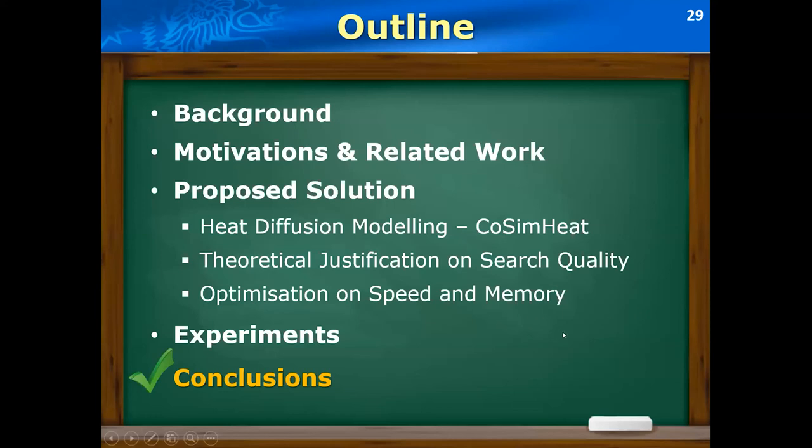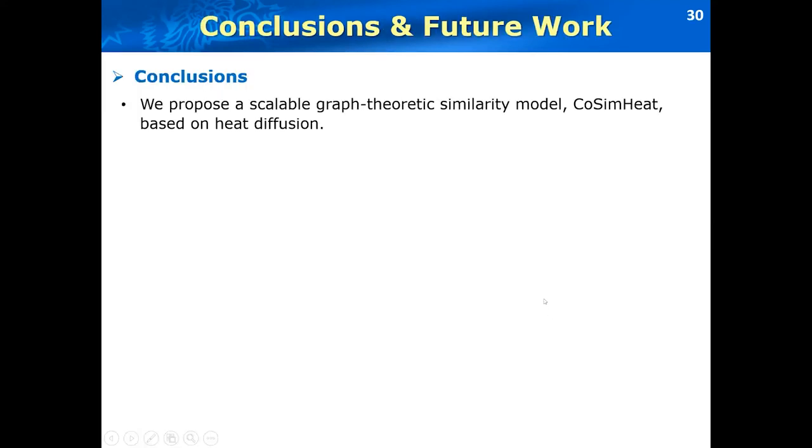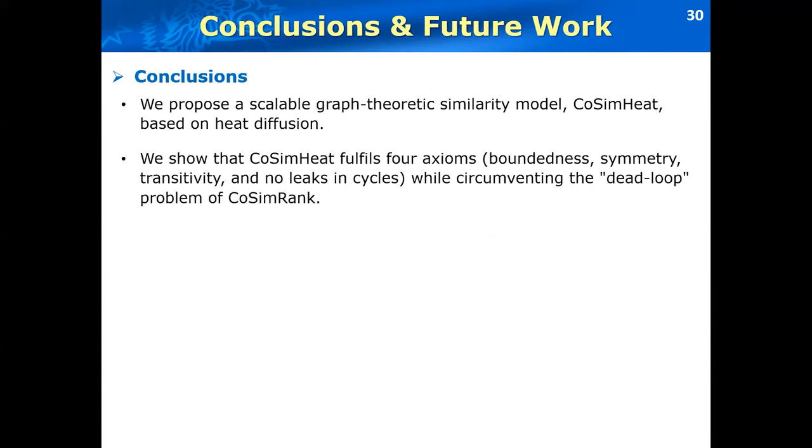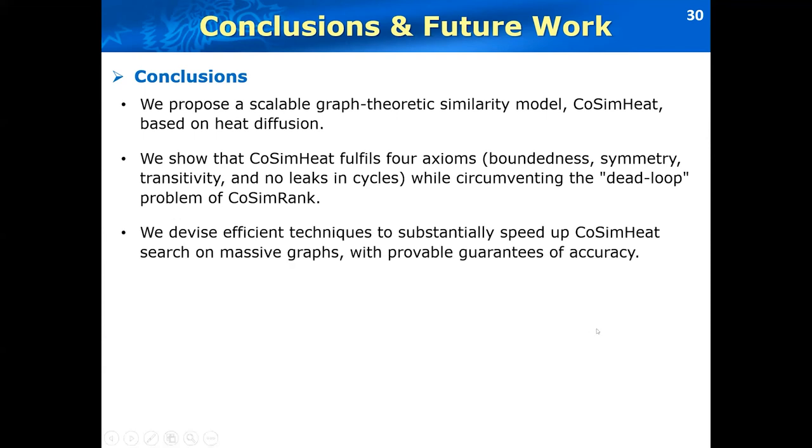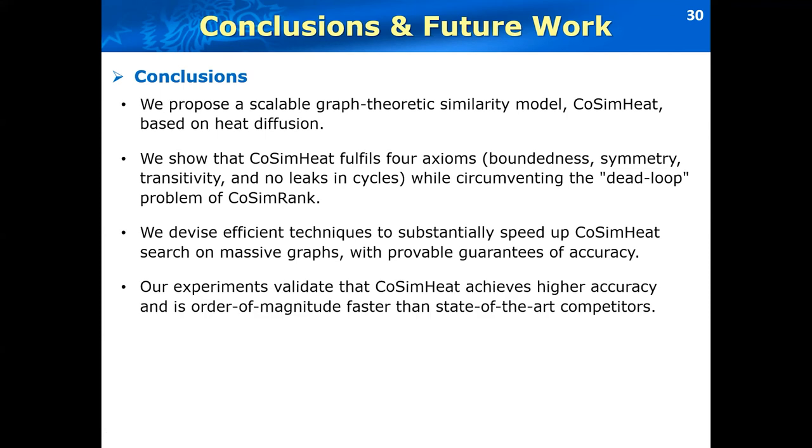Finally, in conclusion, in this work we have proposed a scalable graph theoretical model, namely cosine heat based on heat diffusion mechanisms. We have showed that the proposed model fulfills the four axioms: boundedness, symmetry, transitivity, and no leakages in cycles while circumventing the dead loop problem of cosine-rank similarities. We have also proposed optimization techniques to speed up the cosine heat search on massive graphs. Our experimental results validate the effectiveness and efficiency of the cosine heat.